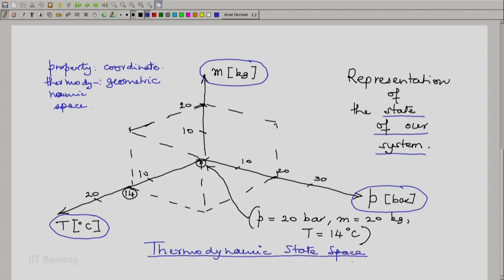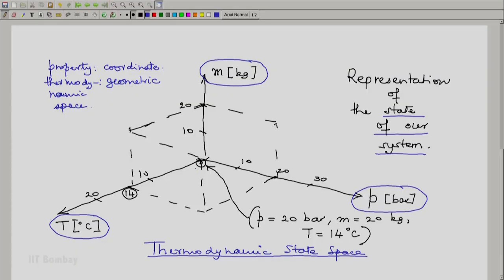In thermodynamic state space, each coordinate—in this case pressure, mass, and temperature—represents one thermodynamic property. A state is represented by specified values of those properties: pressure of 20 bar, mass of 20 kilograms, and temperature of 14 degrees Celsius.